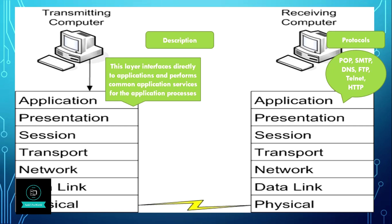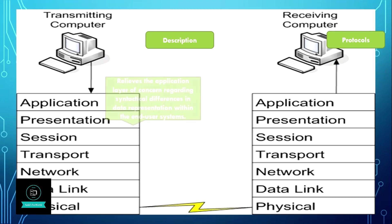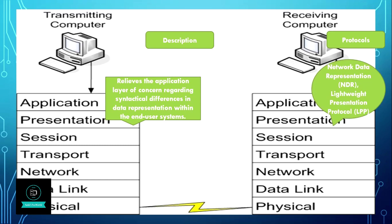The sixth layer of the OSI model is the presentation layer. It relieves the application layer of concern regarding syntactical differences in data representation within end-user systems. It works on protocols such as NDR (Network Data Representation) and LPP (Lightweight Presentation Protocol).